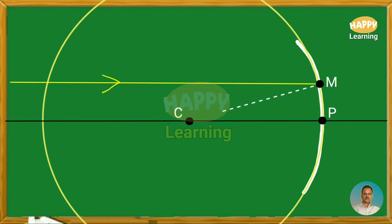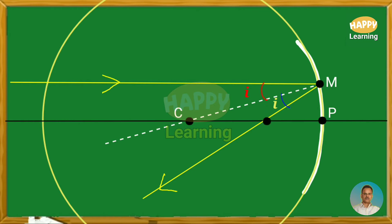A normal is drawn from the point of incidence such that it passes through the center of the sphere. The angle between the incident ray and the normal is the angle of incidence i. Because it is a mirror, reflection takes place, and the angle of reflection — the angle between the reflected ray and the normal — is also equal to i. The point where the reflected ray cuts the principal axis is the focus, represented by the letter F.